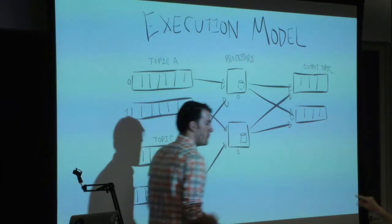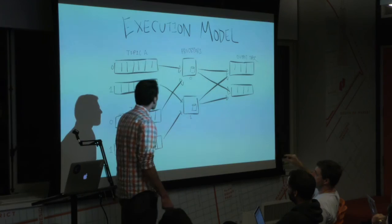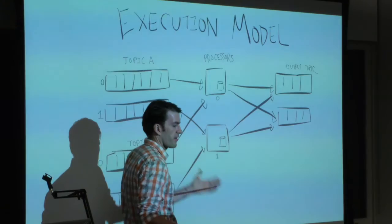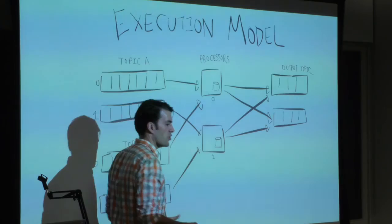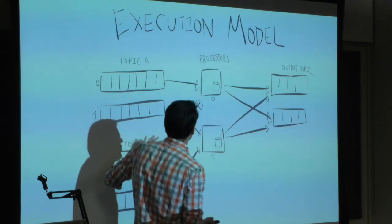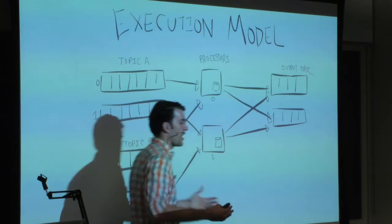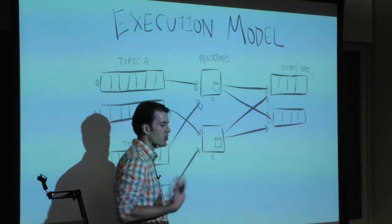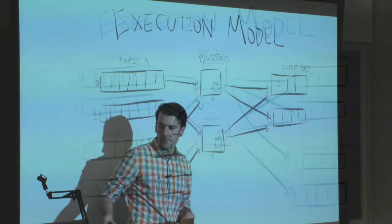An important feature demonstrated here is co-partitioning. Topic A is divided into two partitions, Topic B is divided into two partitions. If those numbers match, you can co-partition them so all partition-zero data goes to the first task, all partition-one data to the next task, and so on. This allows locality and joins where you're guaranteed all inputs are from the same user — you can exploit locality of data and use it in memory locally.